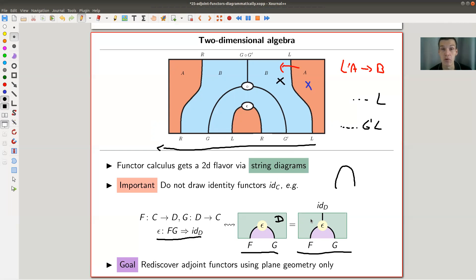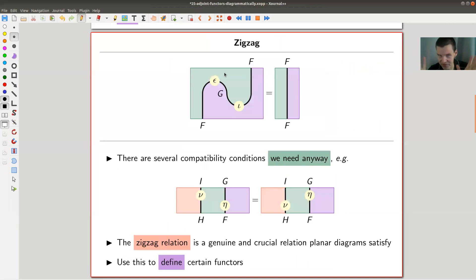The goal of this whole video is to rediscover adjoint functors in plane geometry. Plane geometry should actually dictate the existence of adjoint functors. If we believe adjoint functors are something important and they have natural meaning, they should turn up in this plane geometry because functor calculus is actually really plane geometry. It's a beautiful idea of a string calculus which says that functor calculus is the same as plane geometry in a certain precise sense.